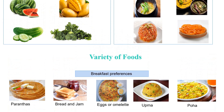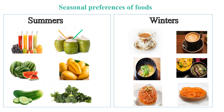You must have noticed that food preferences also vary with seasons. For example, in summers refreshing fruit juices, coconut water, watermelon, mango, cucumber and green leafy vegetables become your favorite food choices. Whereas in winter, hot tea, coffee, soup, sarso ka saag, gajar ka halwa and garma garam jalebi are your favorite choices.